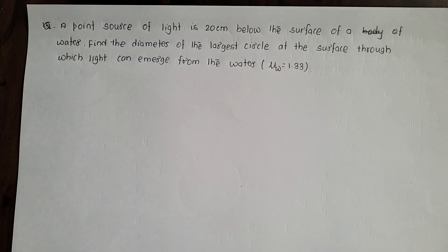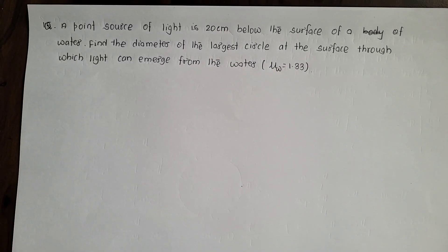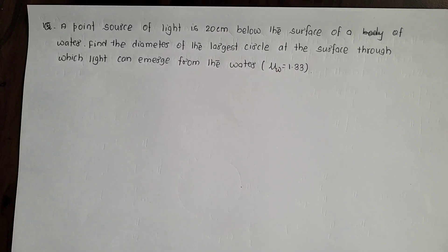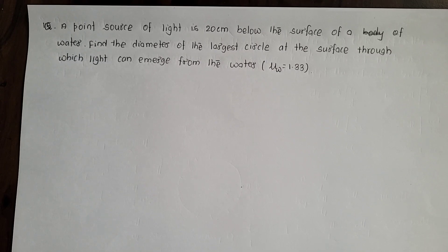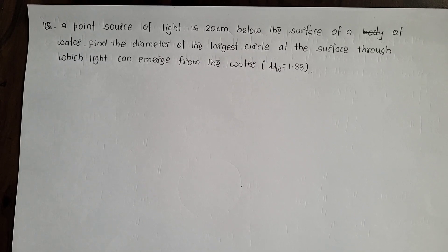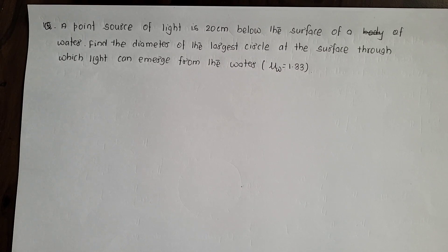Hello students, today's video is the question of class 11 optics — refraction of light through water. A point source of light is 20 cm below the surface of water. Find the diameter of the largest circle at the surface through which the light can emerge from the water.